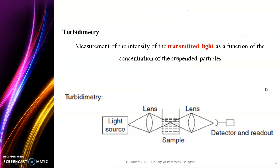Turbidimetry involves the measurement of the intensity of transmitted light as a function of the concentration of suspended particles. The light source emits radiation which is absorbed by the sample, and whatever light is transmitted will be detected by the detector that is placed at the end.